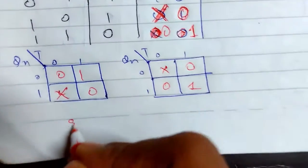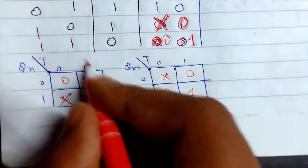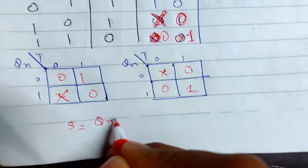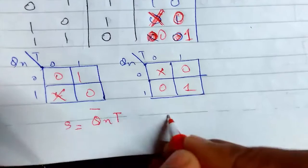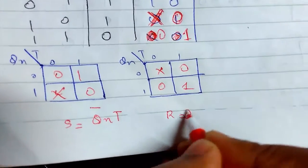We can see that our S will be, since nothing is forming, this will be QN bar T, and R will be QN T.